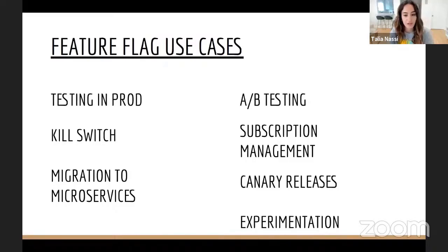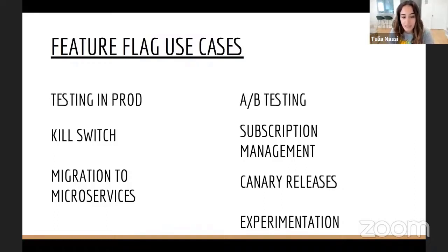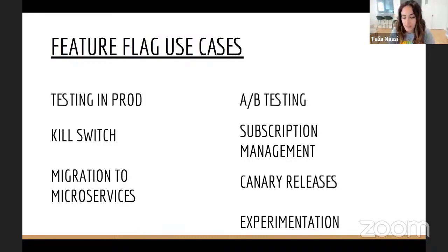A feature flag is a piece of code that lets you separate code deployment from feature release, and this has a lot of different use cases. We just saw one example of how you'd want to use this if different parts of a feature are not ready. You can also use feature flags to test your code in production to ensure proper functionality. You can use them to perform A/B testing to figure out which version of a feature gives you a higher conversion rate. You can use them as a kill switch, which allows you to turn off a feature in case something goes wrong. You can use feature flagging for subscription management to manage permissions, implement a canary release or a percentage rollout where your feature is only made available to a small subset of users, identify issues before making it available to the entire user base, and also to migrate your monolith to microservices.